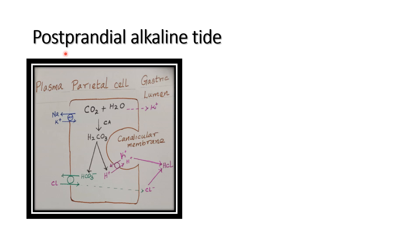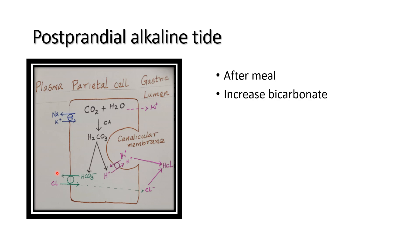Postprandial means after meal. Postprandial alkaline tide usually occurs after the meal. After the meal, hydrogen ion is secreted through the gastric lumen through the proton pump. For each hydrogen ion secreted into the gastric lumen, one bicarbonate ion enters into the plasma, increasing bicarbonate ion levels in the blood.